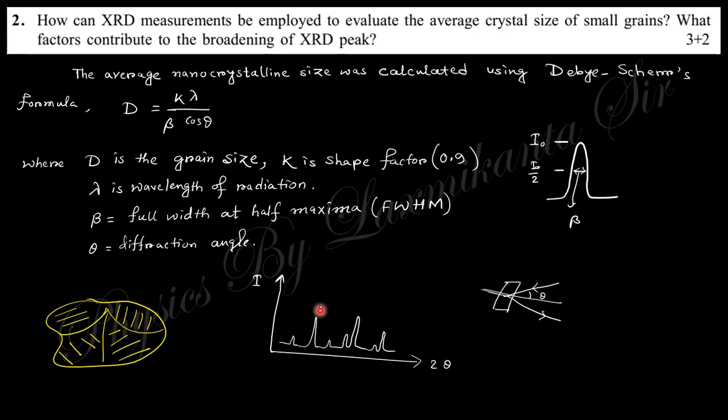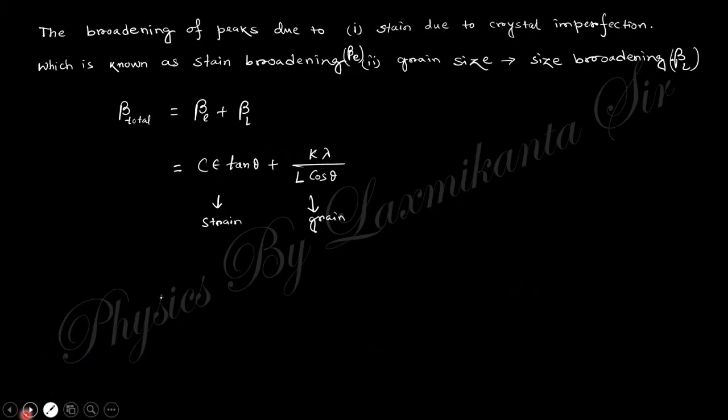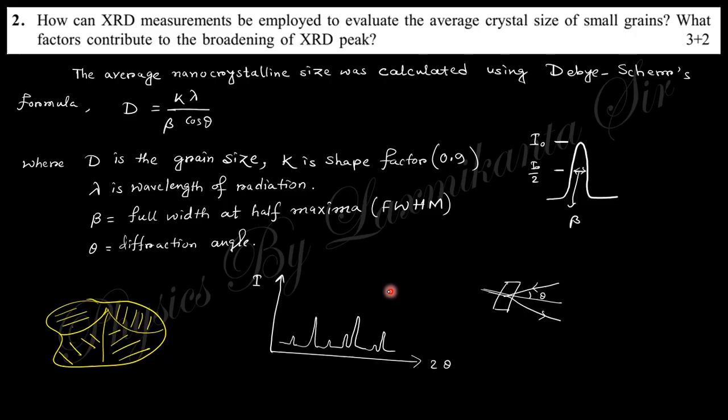Using this formula from the peak in the experiment, you can easily find the grain size. Broadening of peaks is due to two factors: strain of the crystal imperfection and grain size. This is ε tan θ for strain, and K λ/(D cos θ) for grain size.